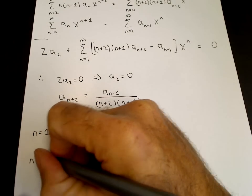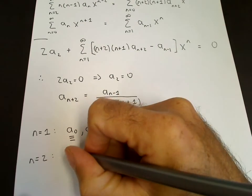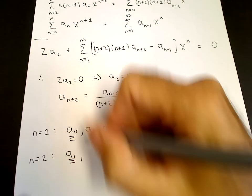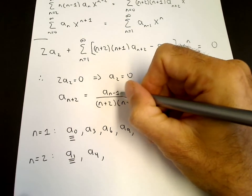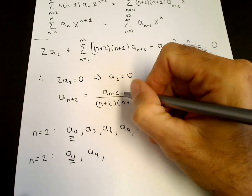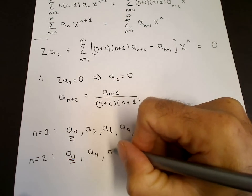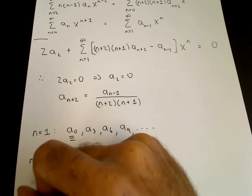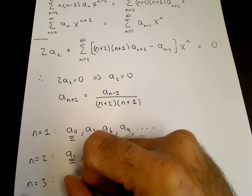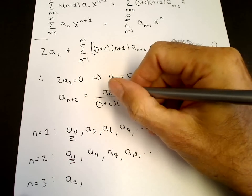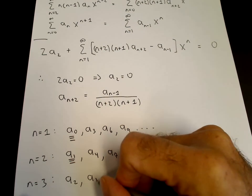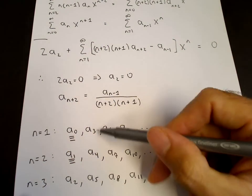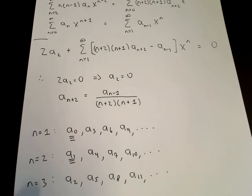Starting at n equals two gives an a one, which is free. Given a one, n equals two gives a four; n equals five gives a seven; the next is a ten — going up by three each time. Starting at n equals three, we have a two, giving a five, a eight, a eleven. So the three sequences cover all coefficients: indices 0, 3, 6, 9; then 1, 4, 7, 10; then 2, 5, 8, 11.